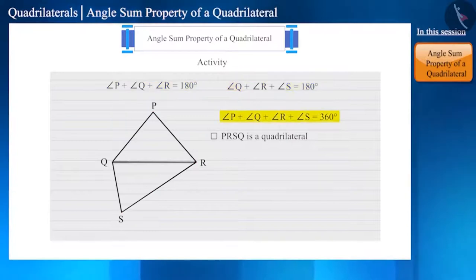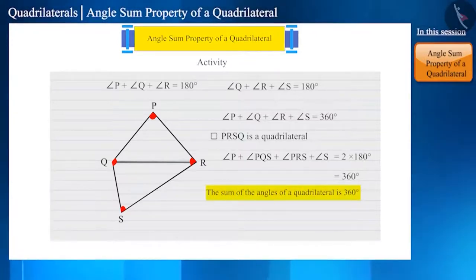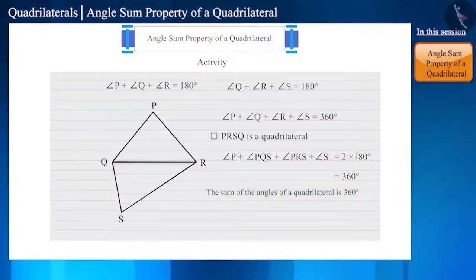In comparison to the triangle, a quadrilateral has one extra triangle but the sum of the angles of a quadrilateral is two times the sum of the angles of a triangle. This is what we call the angle sum property of a quadrilateral. We tested this property through an activity. Let us now try to prove it mathematically.